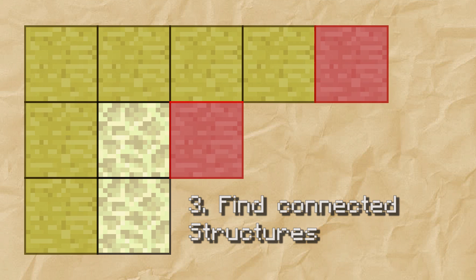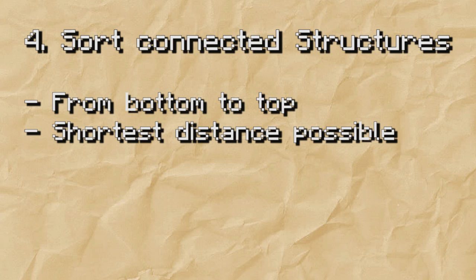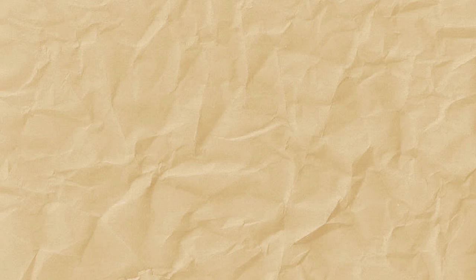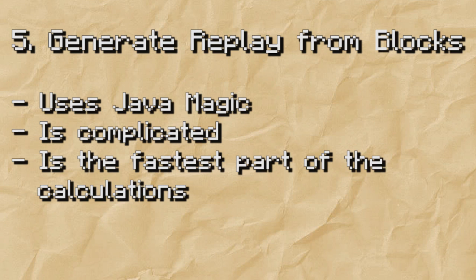Once the tool has found all of the connected structures in the schematic, it sorts them so the lowest structures are placed first and the dummy player who has to build and move between those structures later has to move the shortest way possible. Finally, it generates a replay file of the player actually building the structure, using some Java magic that Johnny0702 — the second programmer on the Replay Mod — and I prepared earlier.